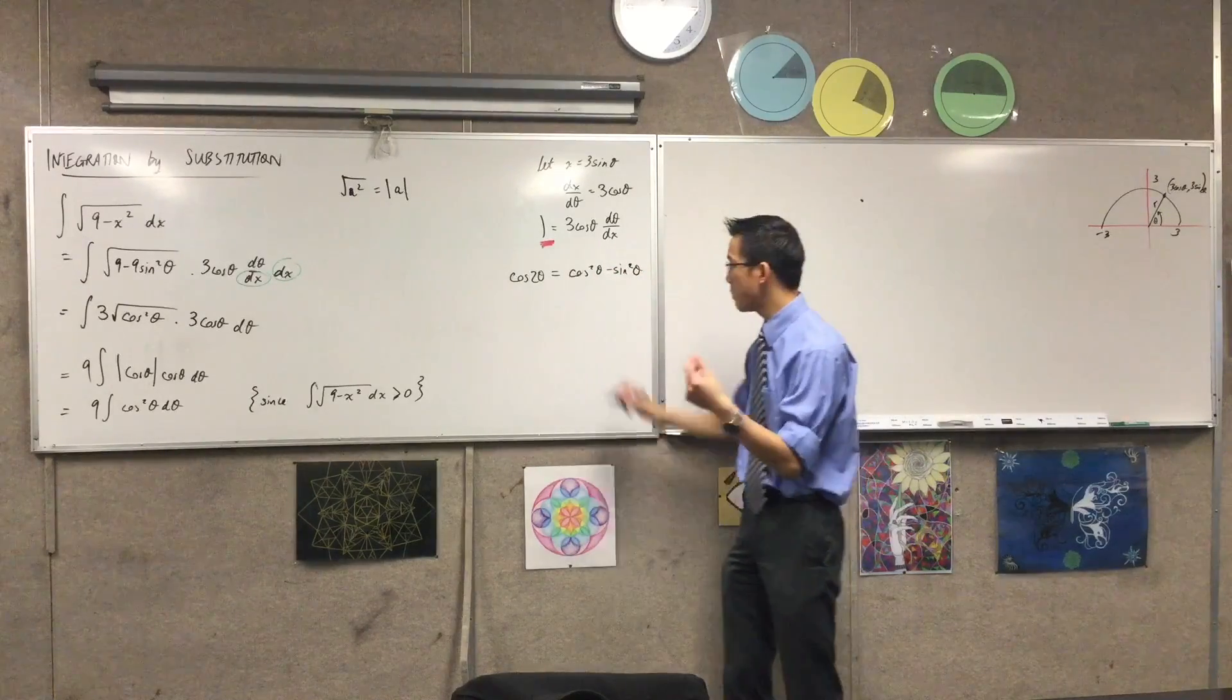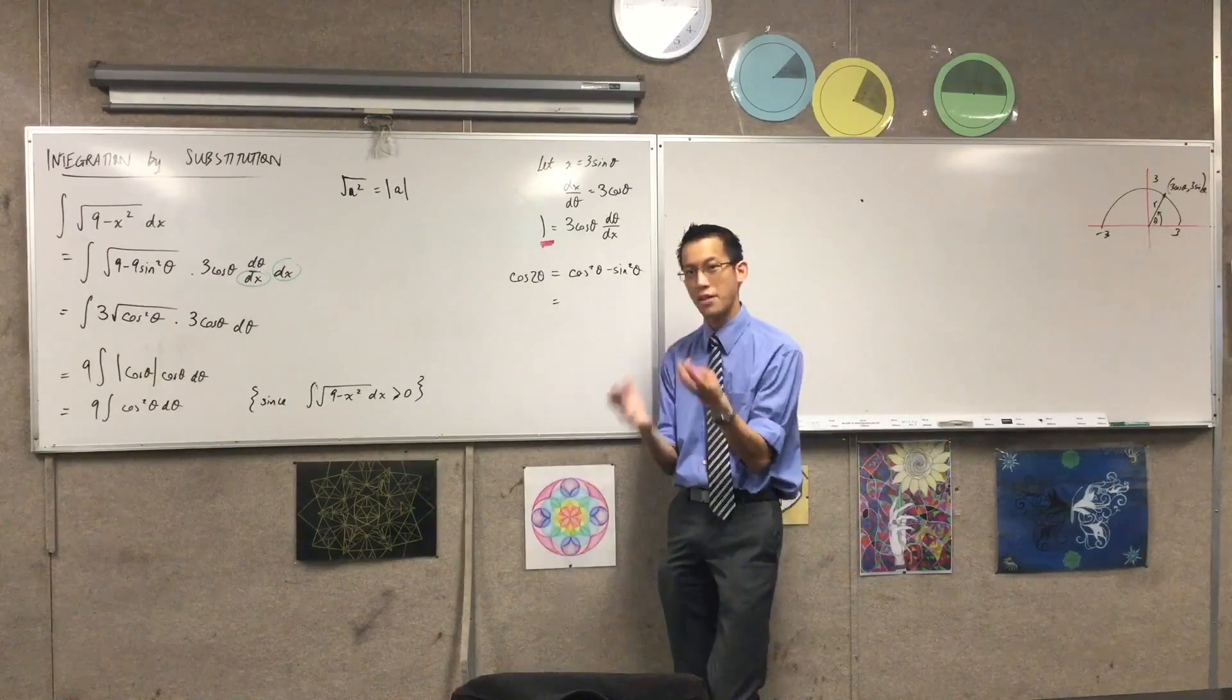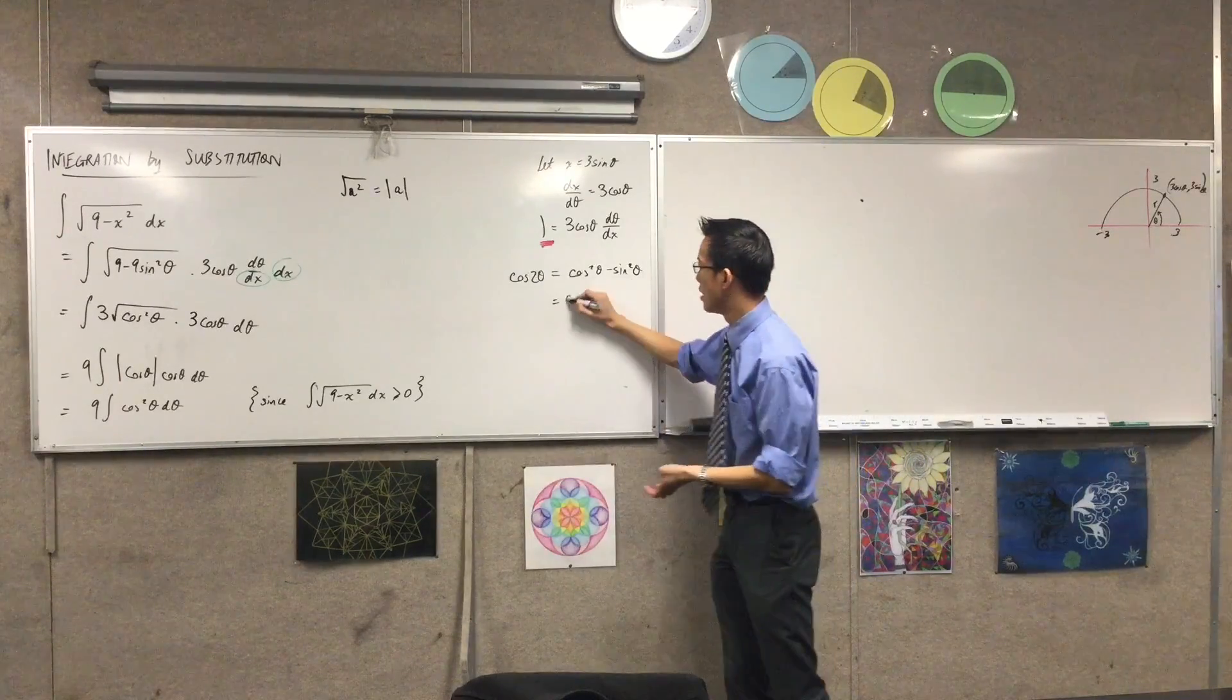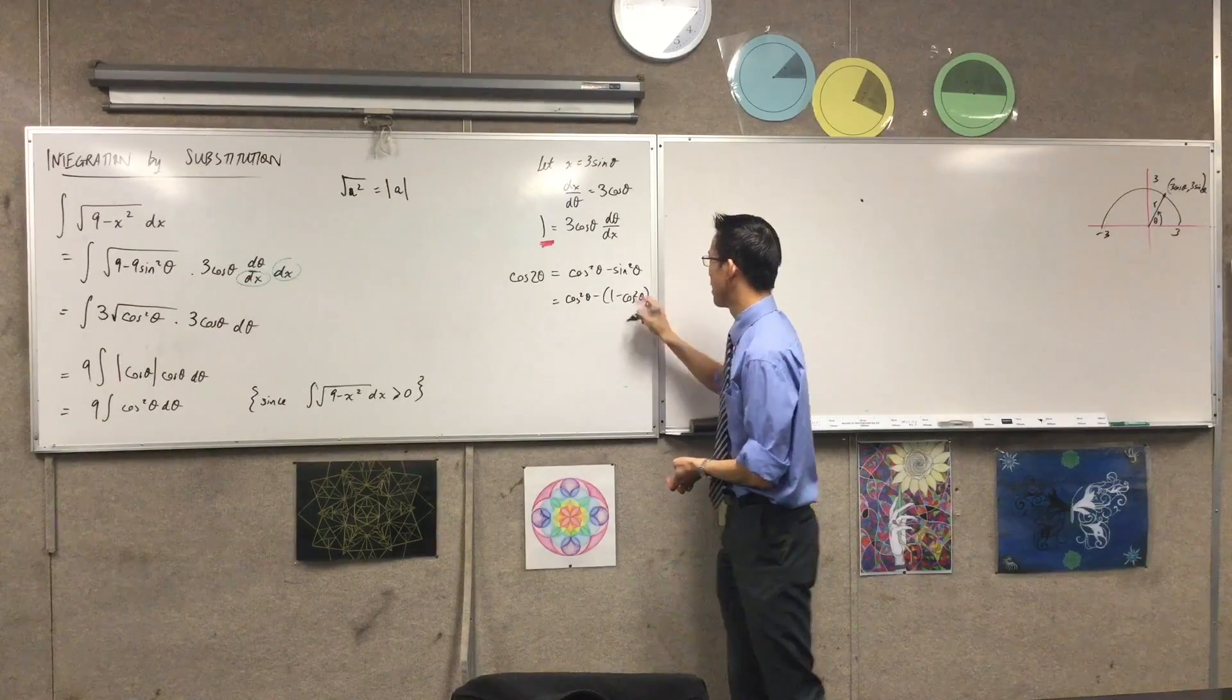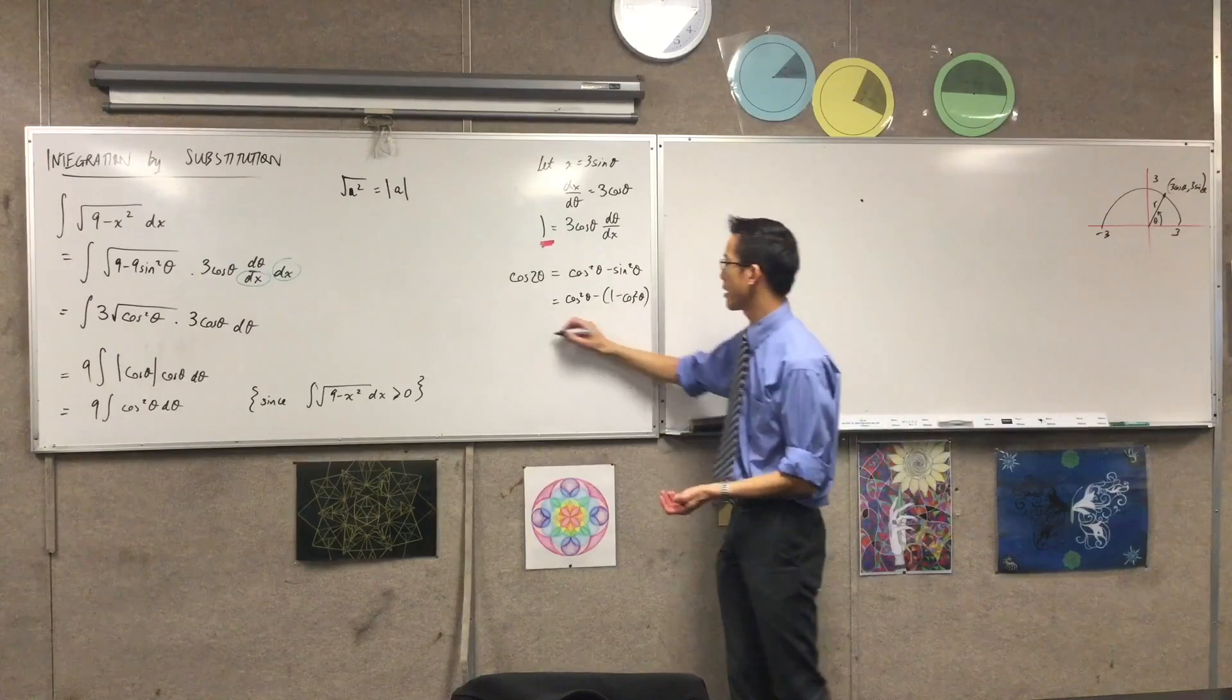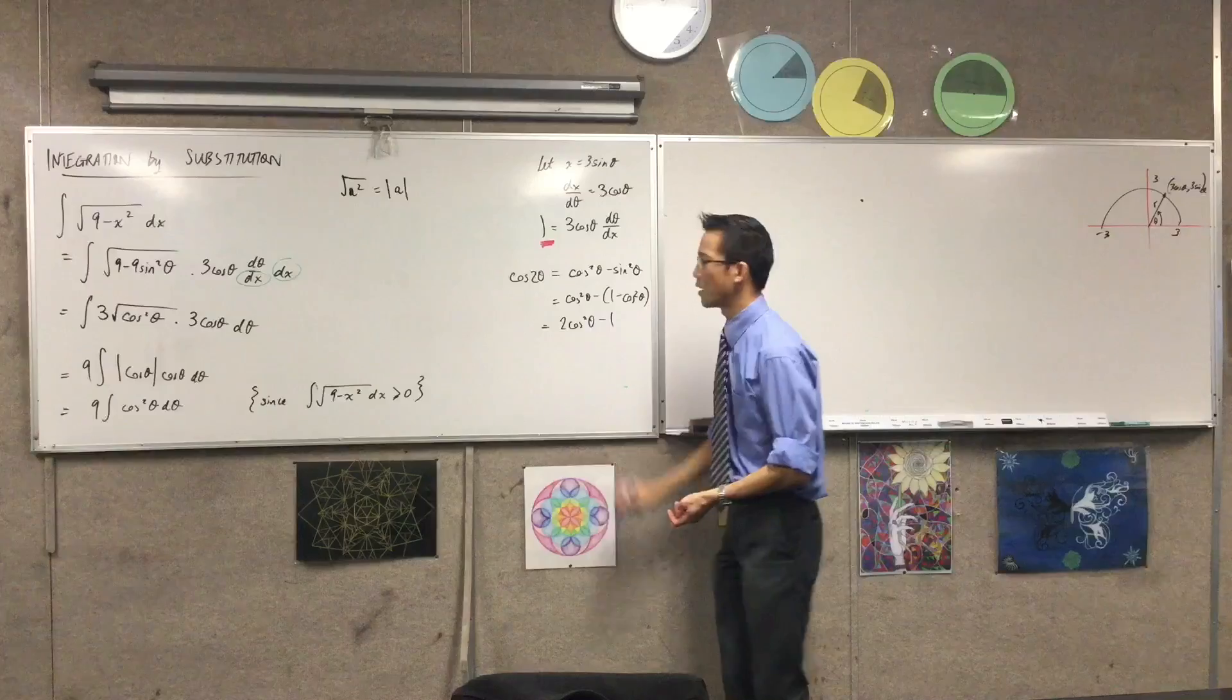So I want you to remember that I can get rid of one of these sine squares because using the Pythagorean identity, these are interchangeable. So this is actually cos squared minus 1 minus cos squared. That's what I substituted for sine squared there. So looking for the double negative there, this is what I'm getting.